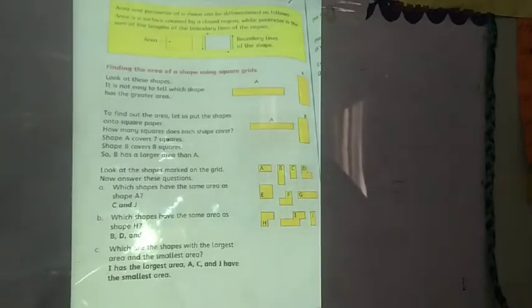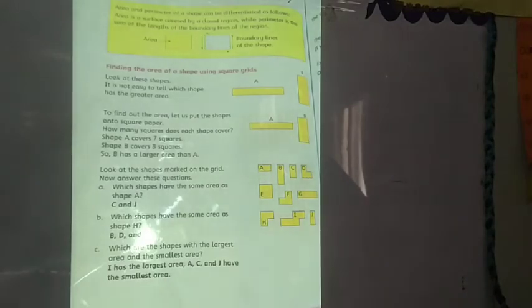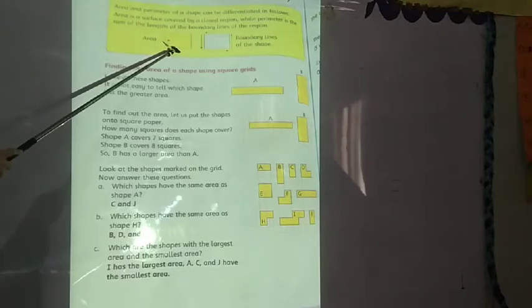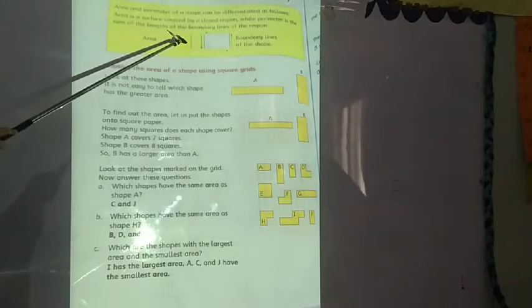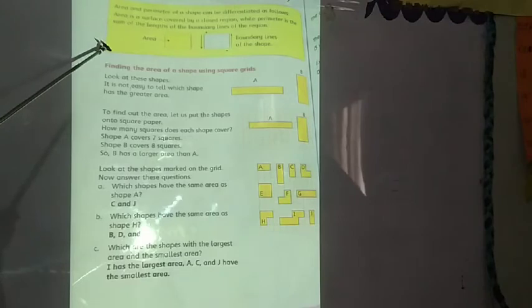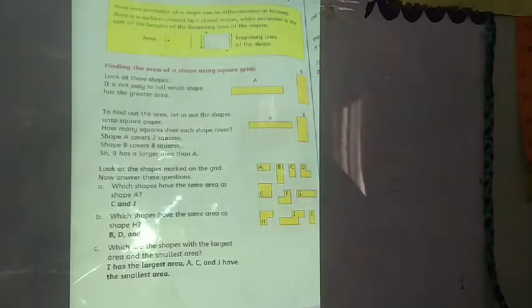Area and perimeter of a shape can be differentiated as follows. In this chapter, we have to differentiate area and perimeter. Area is the surface covered by a closed region. Perimeter is the sum of the lengths of the boundary lines of the region.